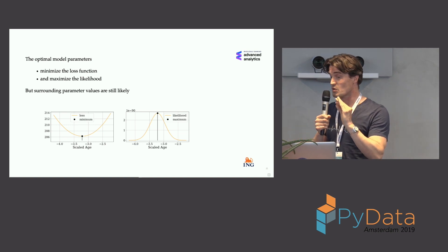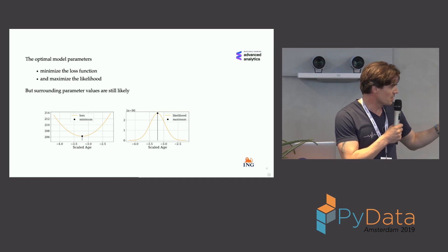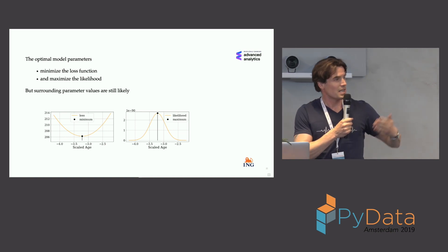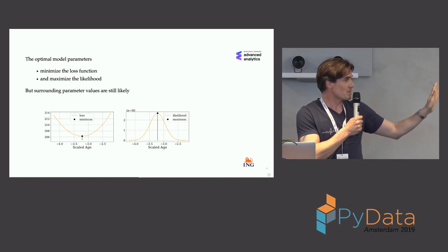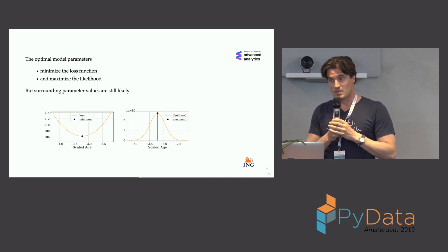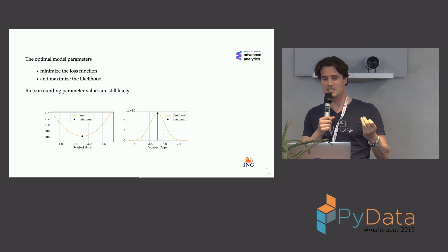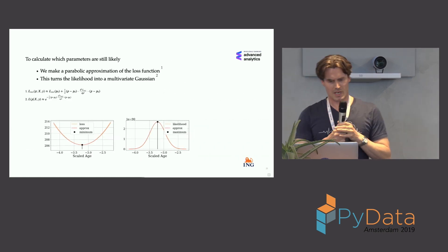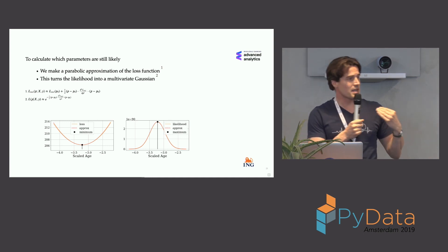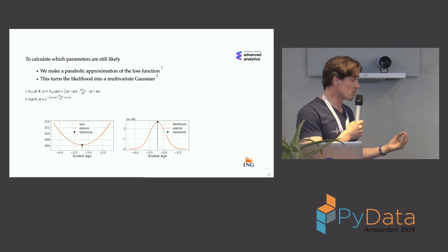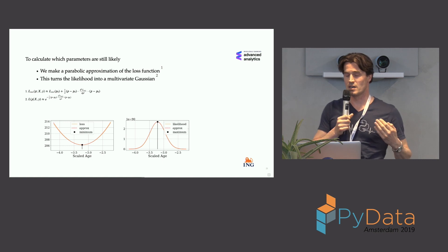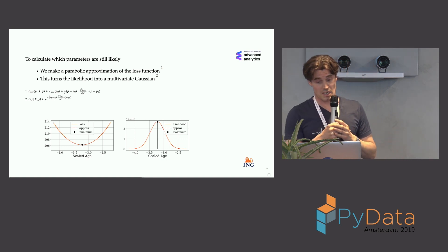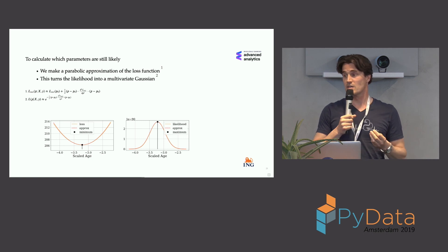That doesn't mean other parameters are not likely. If you look at the likelihood, going a little bit to the left or right is still quite likely — it's like saying if I had a different dataset I might end up just a bit to the right or left. So the task to estimate uncertainty is basically saying: what's the range left and right that we still consider likely enough? To do this, we make a parabolic approximation of the loss function — approximating it as a multivariate parabola.